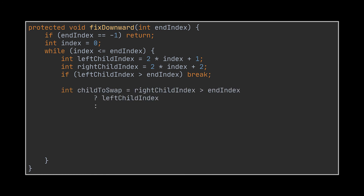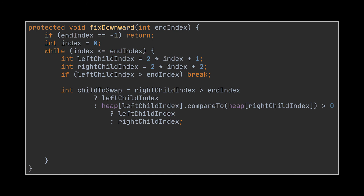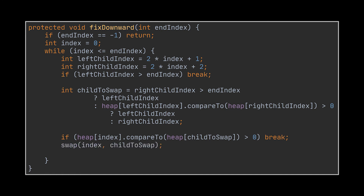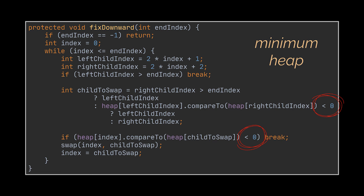Next we determine which child should be swapped with the parent. If the right child index is bigger than the end index, it cannot be picked and we must pick the left child. However, if both are within bounds, we pick the child with the biggest value using the compareTo method. After picking our child, we check if it is bigger than the parent — if not, the tree is already a valid heap and we exit the while loop. If it is bigger, we swap the element at the index variable with the chosen child, then hop one node downward by assigning the index variable to the chosen child index. For the minimum heap fix downward method, it is very similar — simply replace both greater-than signs in the ternary expression and the if statement with a less-than sign.